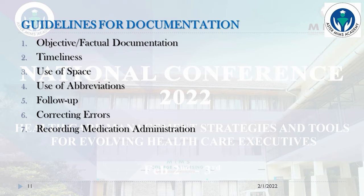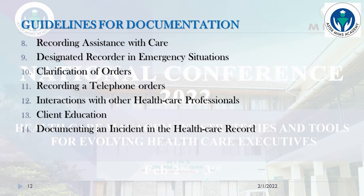Guidelines for documentation: there are about 14 guidelines given by different agencies. The first is objective and factual documentation. Second is timeliness. Third is use of space. Fourth is use of abbreviations. Fifth is follow-up. Sixth is correcting errors. Seventh is recording medicine administration. Eighth is recording assistance with care. Ninth is designating a recorder in emergency situations. Tenth is clarification of orders. Eleventh is recording a telephone order. Twelfth is interaction with other healthcare professionals. Thirteenth is client education. Fourteenth is documenting an incident in the healthcare record.